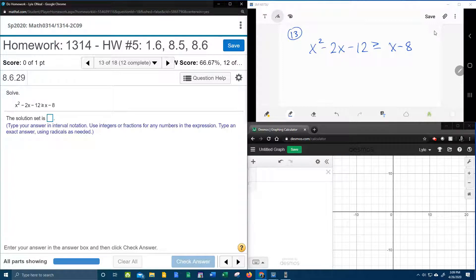We want to set it equal to 0, or in this case greater than or equal to 0, and then we're going to solve using one of the techniques that we have for solving a quadratic. So the first thing I'm going to do is I'm going to take this x and the negative 8, and I'm going to bring them over, and that will make this side 0.